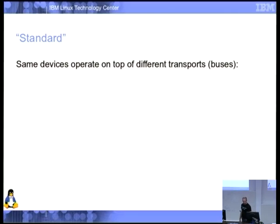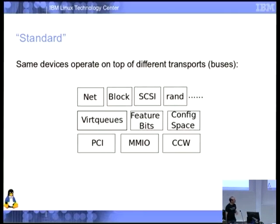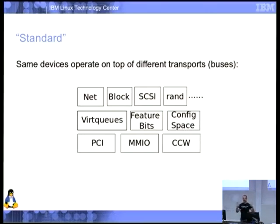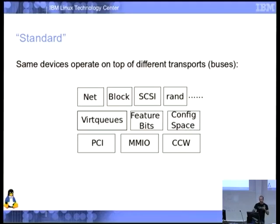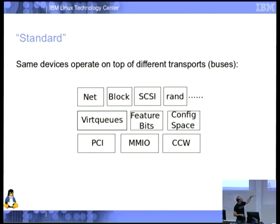Standard also means the same devices operate on top of different transports. Net, block, SCSI, console, balloon — all use the same VirtIO infrastructure with these virtqueues. We use feature bits, which we'll mention in a moment. You have a standard config space. And you use that whatever bus you're on — all of them share that VirtIO infrastructure on top of whatever bus you happen to choose.